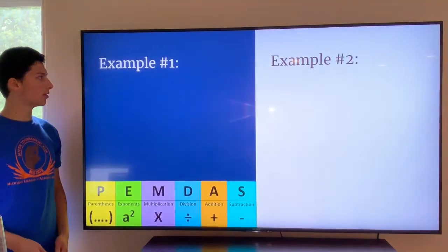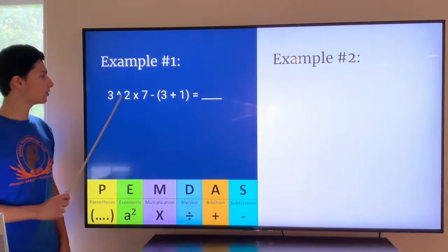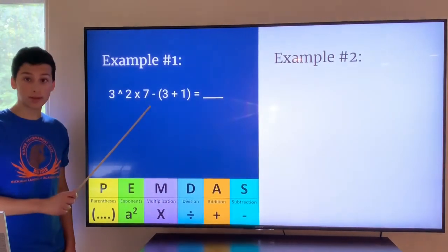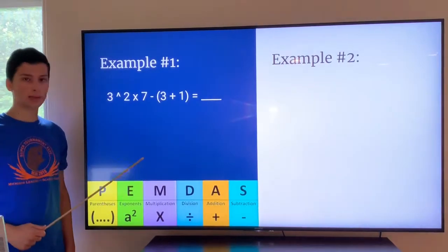Let's look at a couple of examples. The first example is going to be three to the power of two times seven minus, in parentheses, three plus one. We want to know what this equals using PEMDAS.